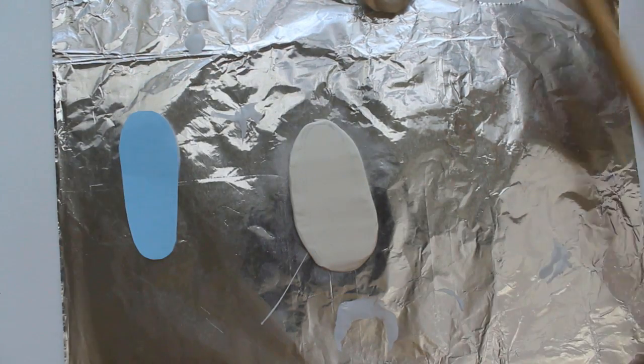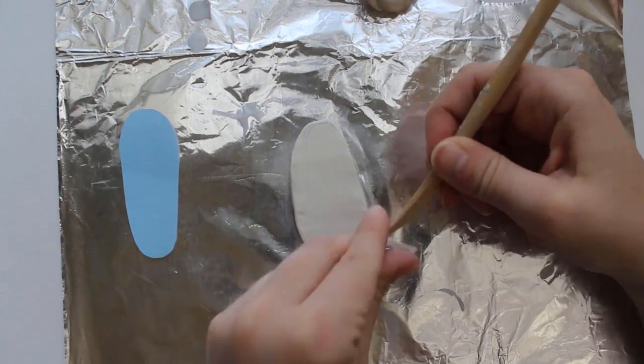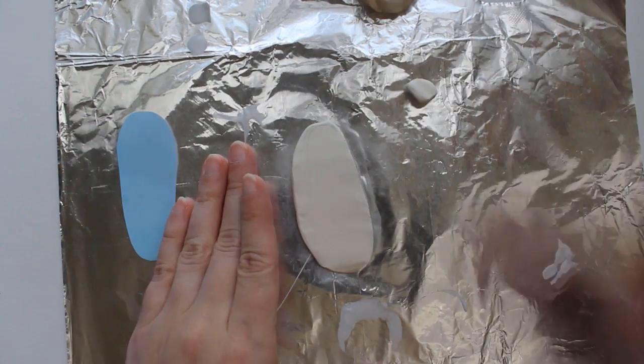Once it's big enough to fit the template, I press it down into the clay just enough to leave a mark around the edge. Then I cut the clay with a wooden sculpting tool, leaving the shape of the sole behind.